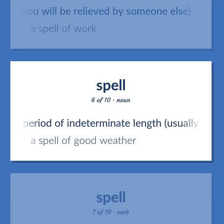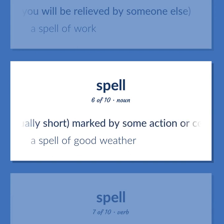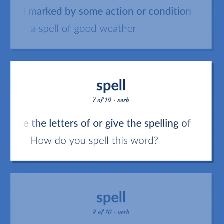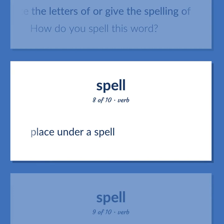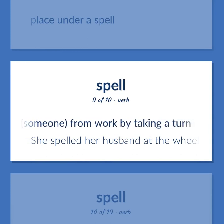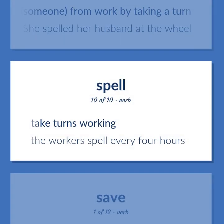A period of indeterminate length, usually short, marked by some action or condition. A spell of good weather. Orally recite the letters of or give the spelling of. How do you spell this word? Place under a spell. Relieve someone from work by taking a turn. She spelled her husband at the wheel. Take turns working. The workers spell every four hours.